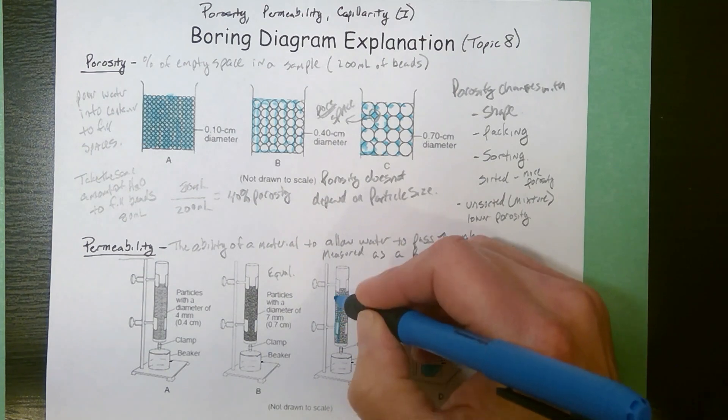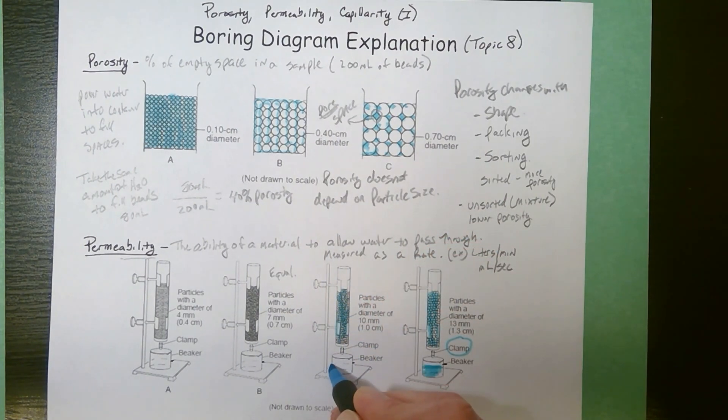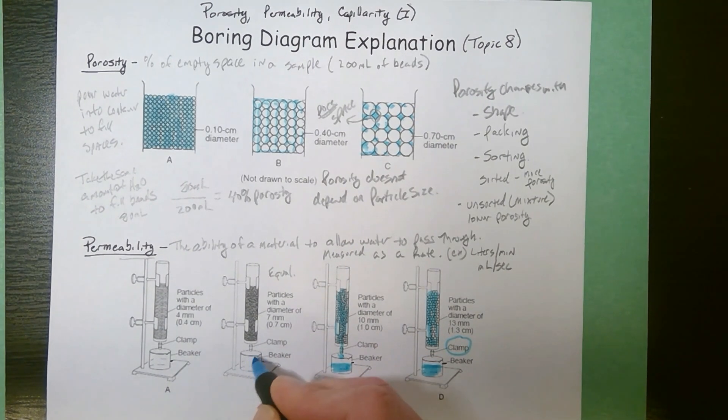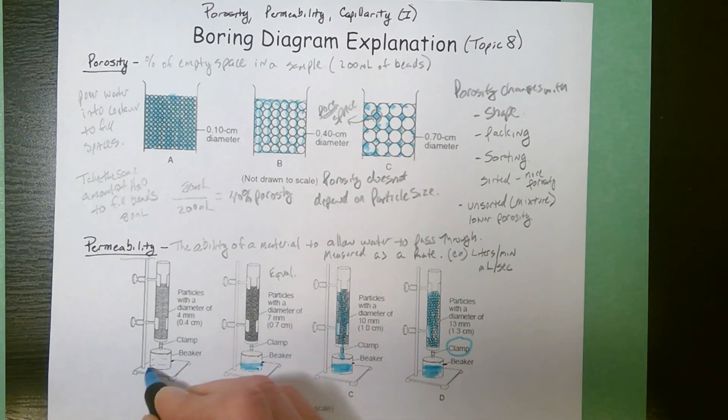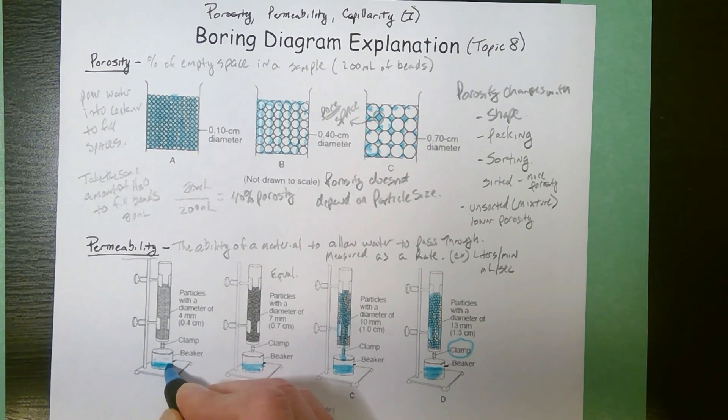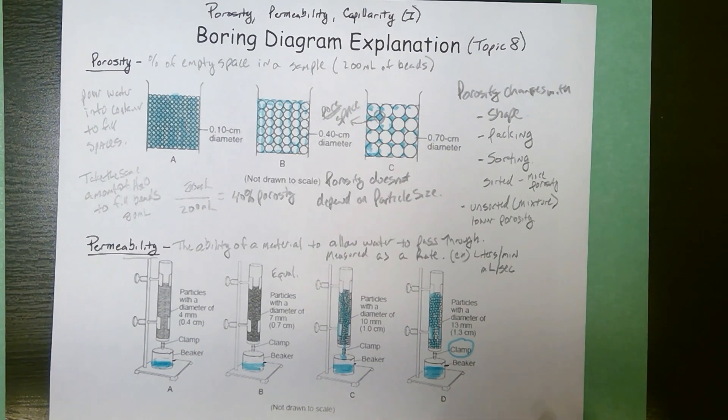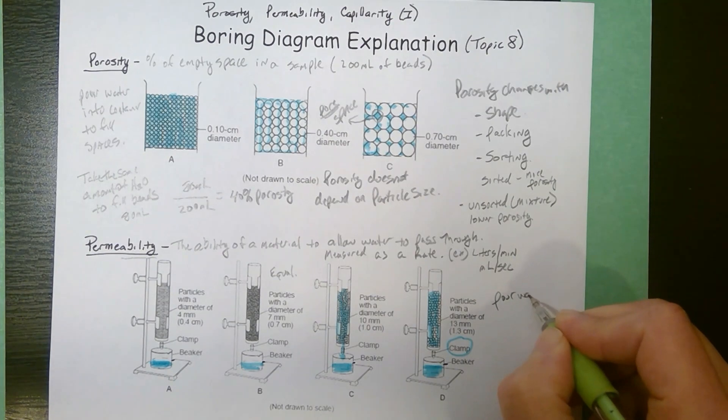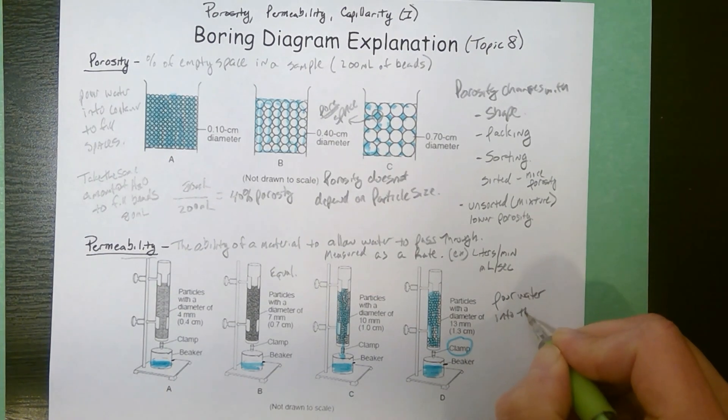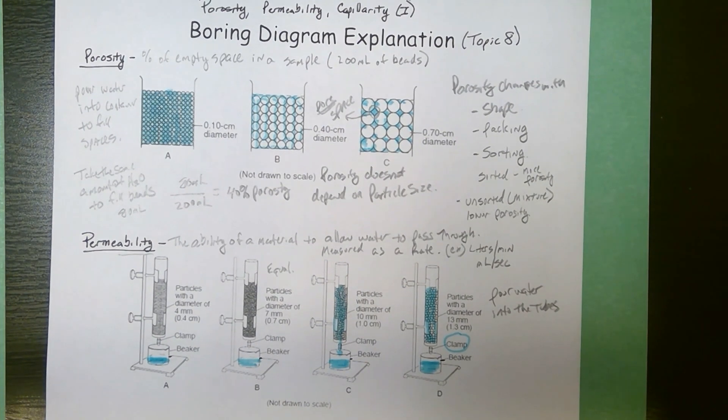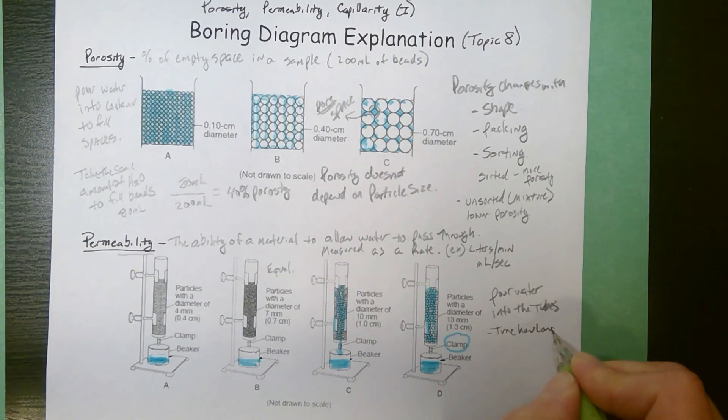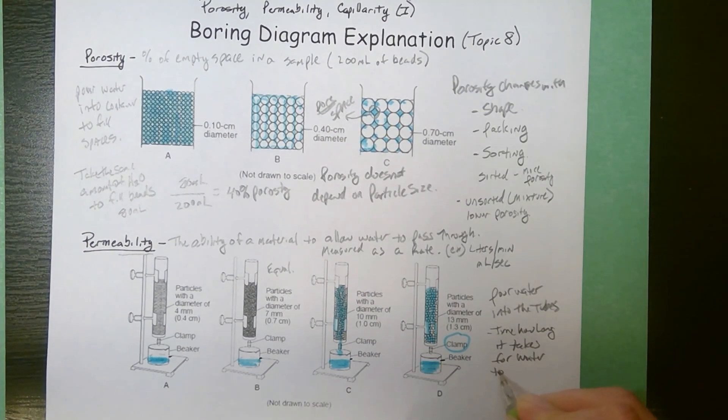We do the same thing here. We'd completely saturate this size particle and then we'd time how long it takes for the water to flow through and down into my container. So we're going to be measuring how readily the fluid moves through or passes through our substance. So you basically would pour water into the tubes. You're going to completely fill up the tubes and you're going to time how long it takes for the water to infiltrate.